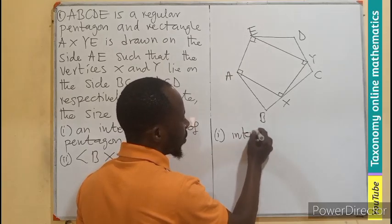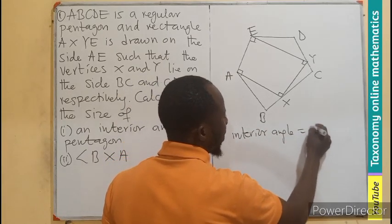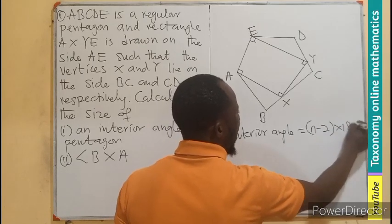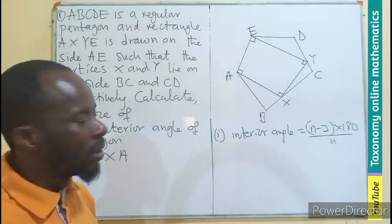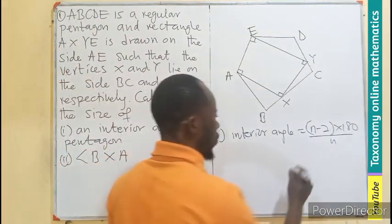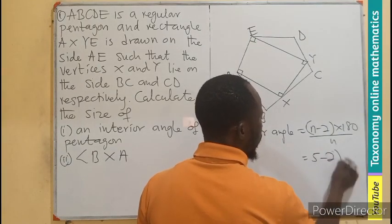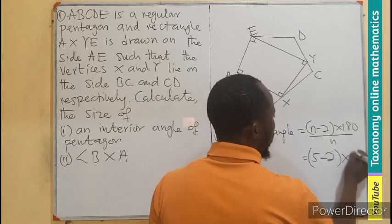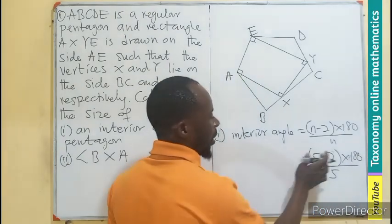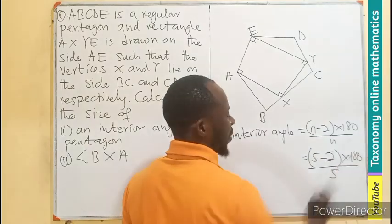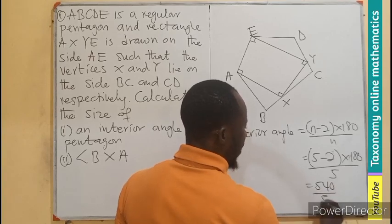So question one. We know interior angle is going to be (n - 2) × 180 divided by n. So we do a substitution, which is going to be n being 5. So this is going to be (5 - 2) × 180 divided by 5. And I believe this will be 3.